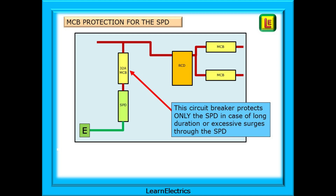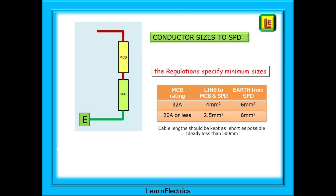In normal operation, the SPD will have suppressed the surge in milliseconds. If the circuit breaker protecting the SPD does trip, there will be no SPD protection, but this will not affect the operation of the rest of the consumer unit. Conductor sizes are important, and the recommended table shows minimum sizes for line, neutral, and earth conductors. Some SPDs come with manufacturer-approved conductors for connecting inside the consumer unit. In any case, keep cable lengths as short as possible — ideally less than 500mm.